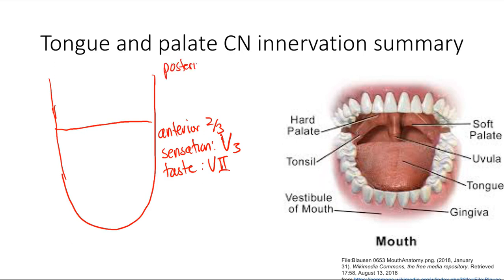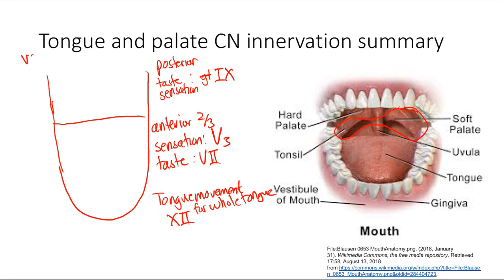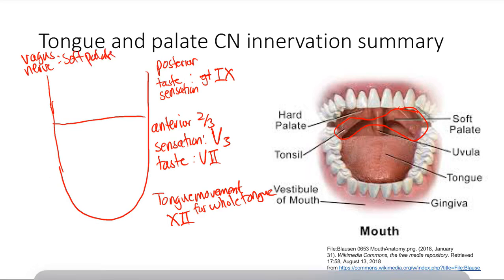For the posterior one-third, taste and sensation is handled by one nerve — the glossopharyngeal nerve, cranial nerve 9. Tongue movement overall is cranial nerve 12. As a bonus: the soft palate elevation and taste in that region is handled by the vagus nerve, cranial nerve 10. And that's it for our cranial nerves.